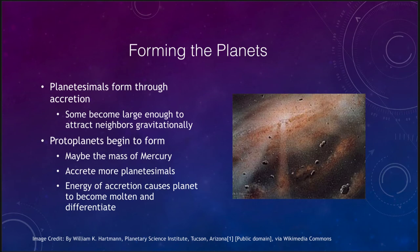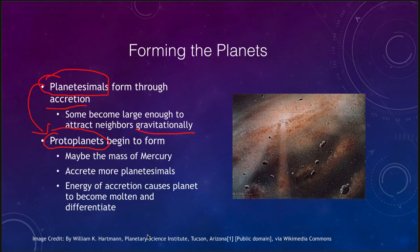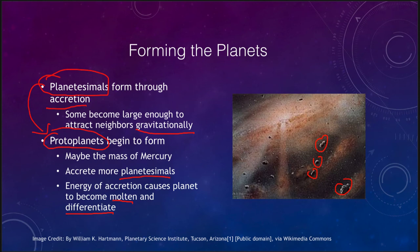Planets formed through a process called accretion. Some planetesimals grew larger and became massive enough to gravitationally attract their neighbors. These planetesimals became what we call protoplanets — perhaps the mass of Mercury — and began accreting more planetesimals. Their stronger gravity pulled in more objects, causing the planet to grow larger and larger. Eventually the heat of all those impacts caused the planet to become molten and differentiate, with metals sinking to the core and lighter materials rising to the surface.